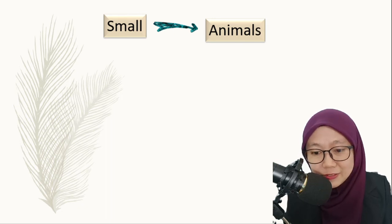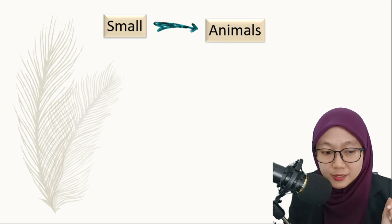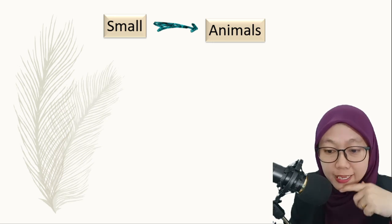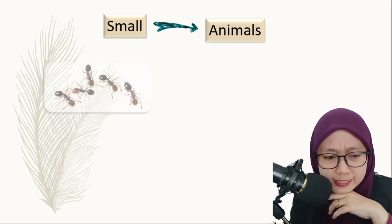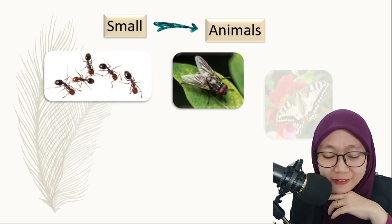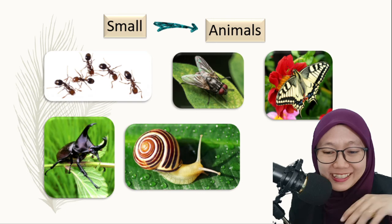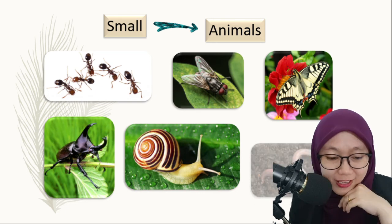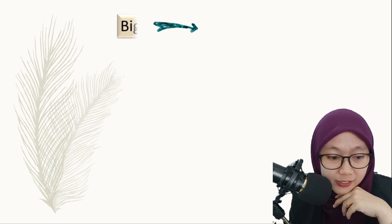Now let's look at small animals. Objects are non-living things, but animals are living things. So what are small animals? That is an ant, a fly, a butterfly, a snail, and a wolf.